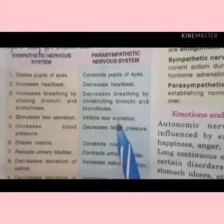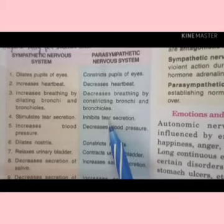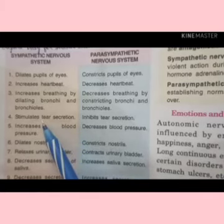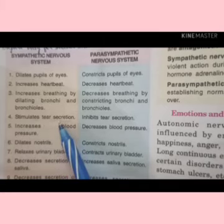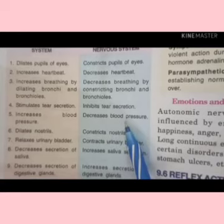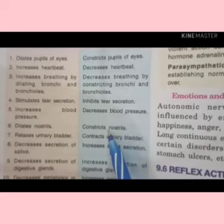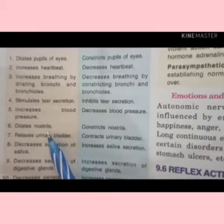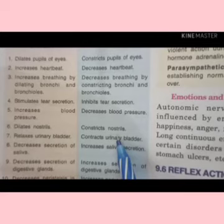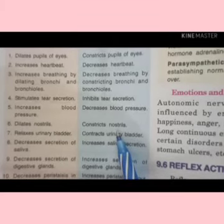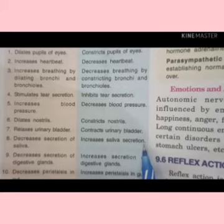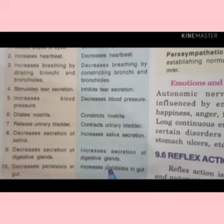The parasympathetic nervous system inhibits tear secretion — when you are stressed or emotional you start crying, but when you return to normal, the tear secretion stops. Blood pressure decreases to normal, nostrils constrict — when you are angry your nostrils dilate, but in normal condition they constrict — and the urinary bladder contracts. Saliva secretion increases, meaning you start eating again, and secretion of digestive glands also increases.